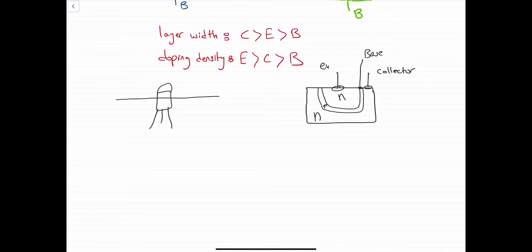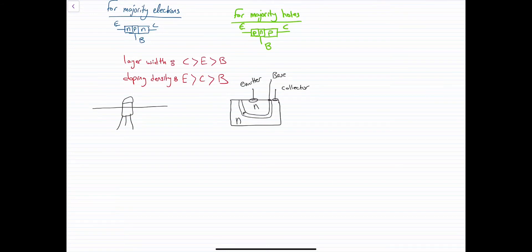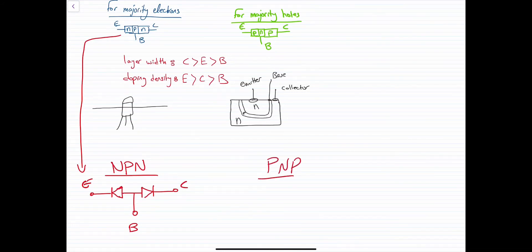And this one is heavily doped with electrons. The NPN type can be represented by two diodes connected in this way, while the PNP type will be connected in the opposite way.